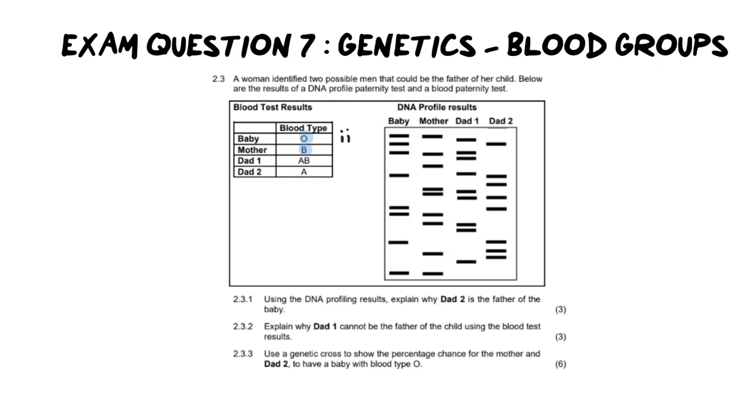Now, then what is the mom's possible alleles? Well, the mother, she would have been I with a capital B. And because her baby has O blood group, she would have also had a little i, and she would have given that i to her child. Now, out of the two other possible dads, we can actually work out what their alleles are.